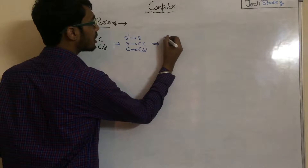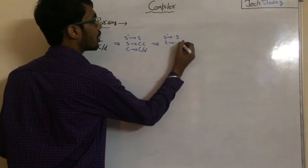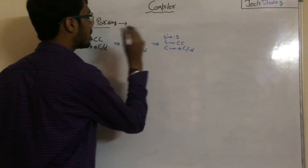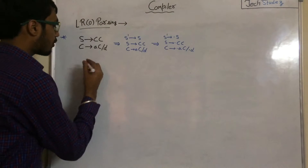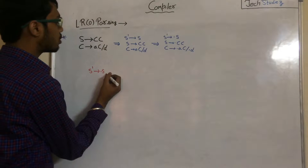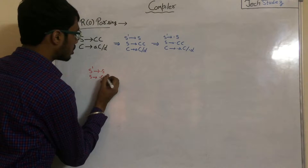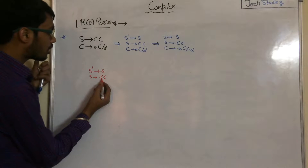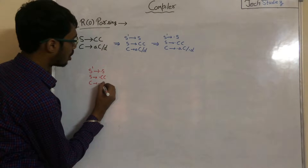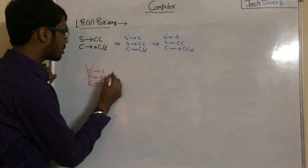We have to add a dot at the left-hand side of each production: S' to ·S, S to ·CC, C to ·AC, and C to ·D. Starting from S' to ·S — after the dot we get a non-terminal symbol, so we add the production S to ·CC. After that dot we again get a non-terminal, so we add C to ·AC and C to ·D.